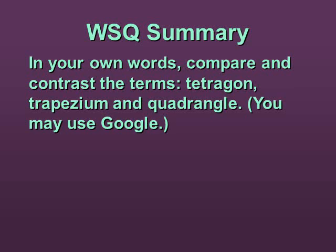So for your WISC summary, in your own words, I want you to compare and contrast the terms tetragon, trapezium, and quadrangle. Obviously you can Google these, I want you to define them and say how they're the same and how they're different and give me some examples. So it's really important that you are thorough, some of you are not being thorough, you're trying to be as brief as possible. So I'm okay with brief, I just want it to be thorough, and if you are not complete, then you're not doing the assignment correctly. So I will see you in class.